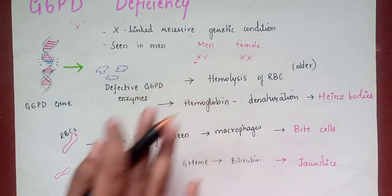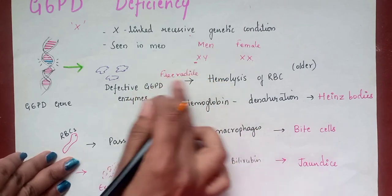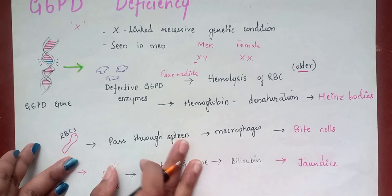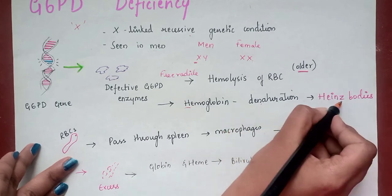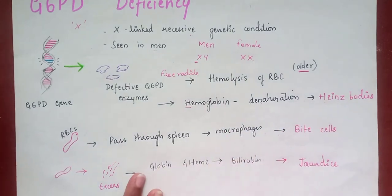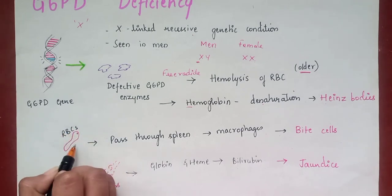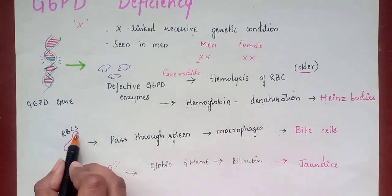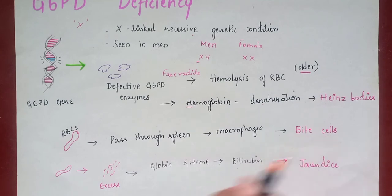In G6PD deficiency, due to the enzyme deficiency there are many free radicals in the blood. These free radicals cause hemolysis of RBCs, especially older RBCs. The free radicals also affect hemoglobin, causing denaturation and forming Heinz bodies. When RBCs carrying Heinz bodies pass through the spleen, the macrophages recognize them as foreign and bite the RBCs, producing bite cells visible in circulation.